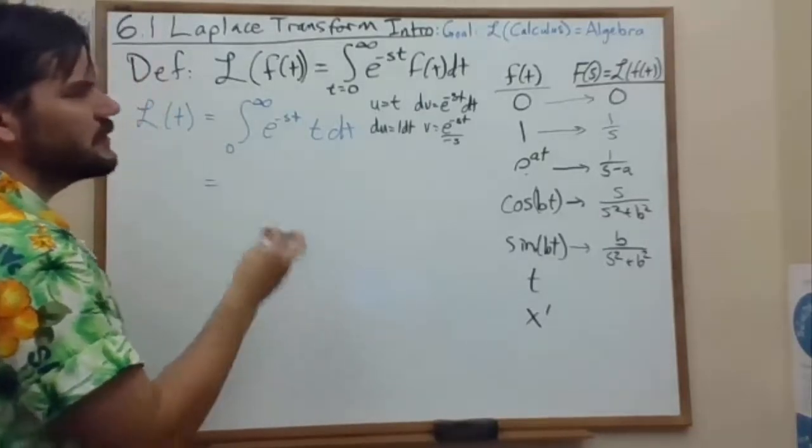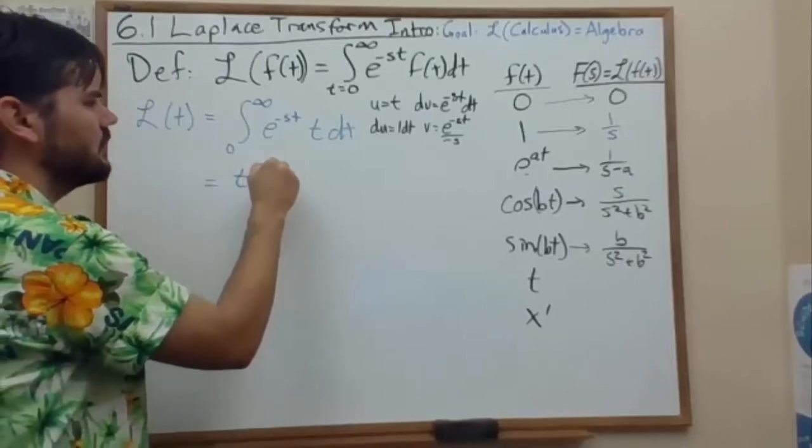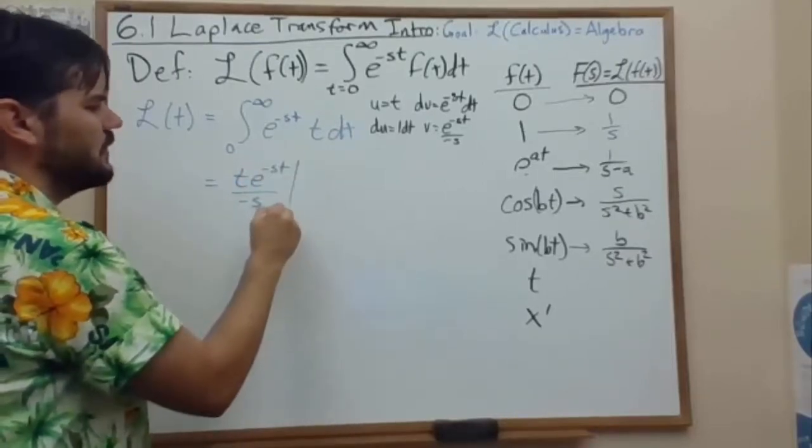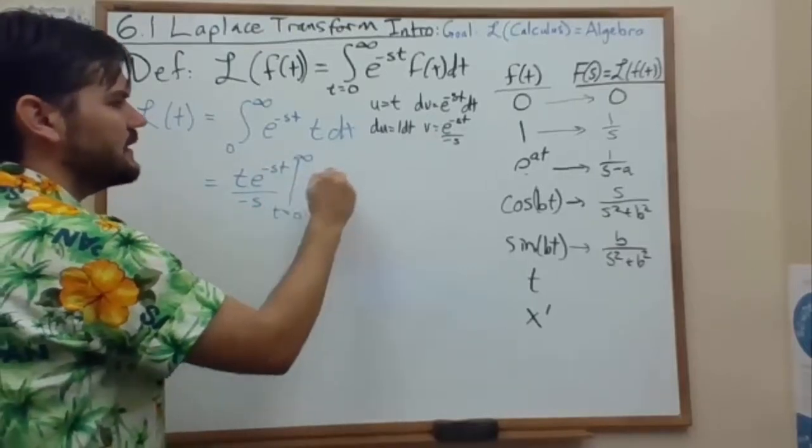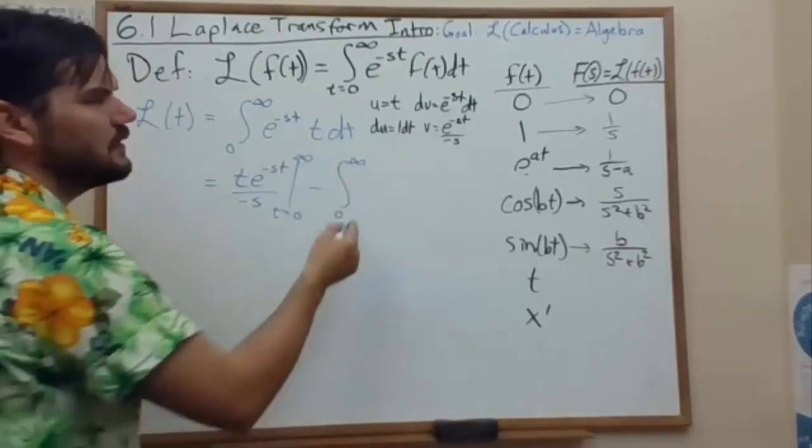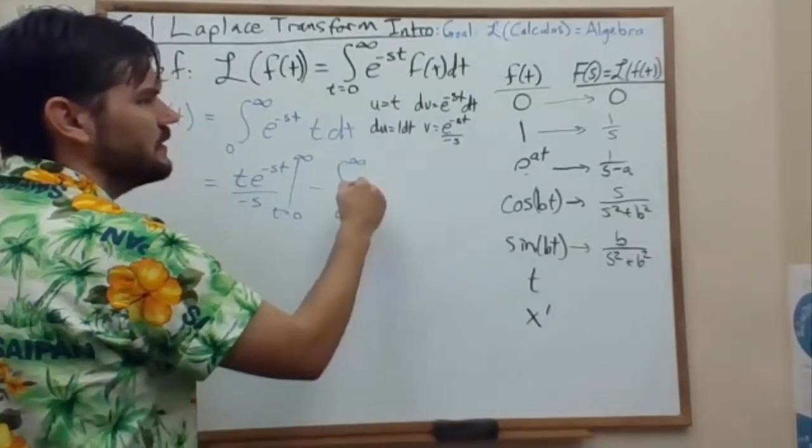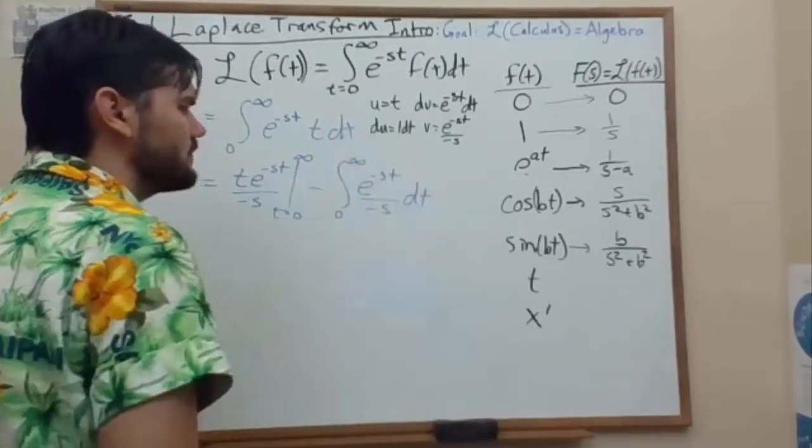And we get the product u times v from t equals 0 up to infinity minus the integral from 0 to infinity of v times du, e to the negative st divided by negative s, dt.